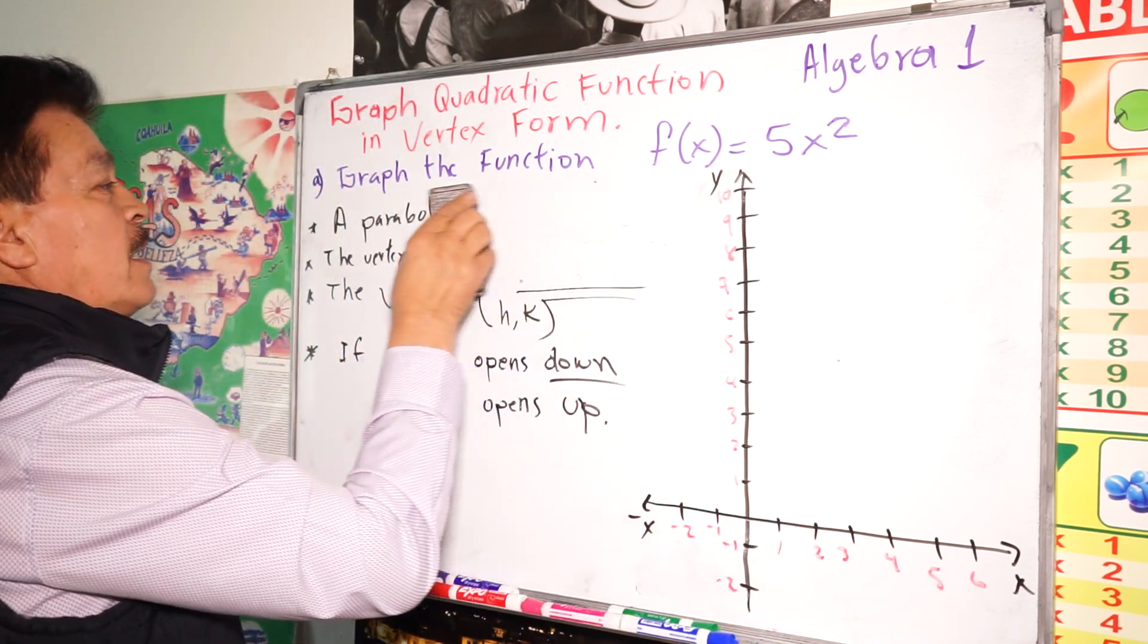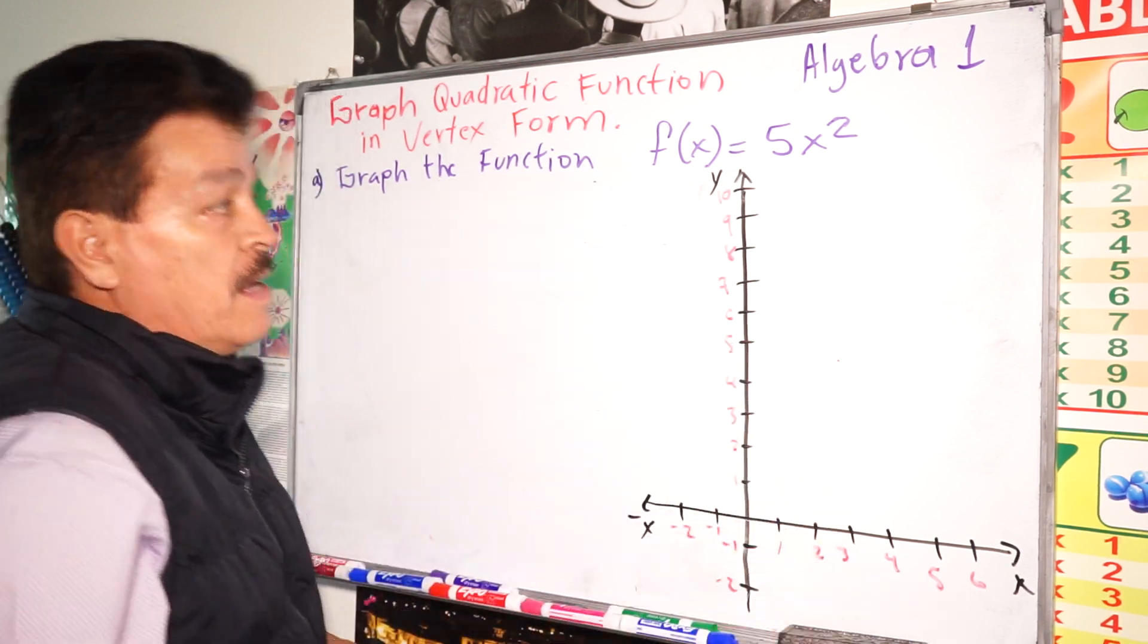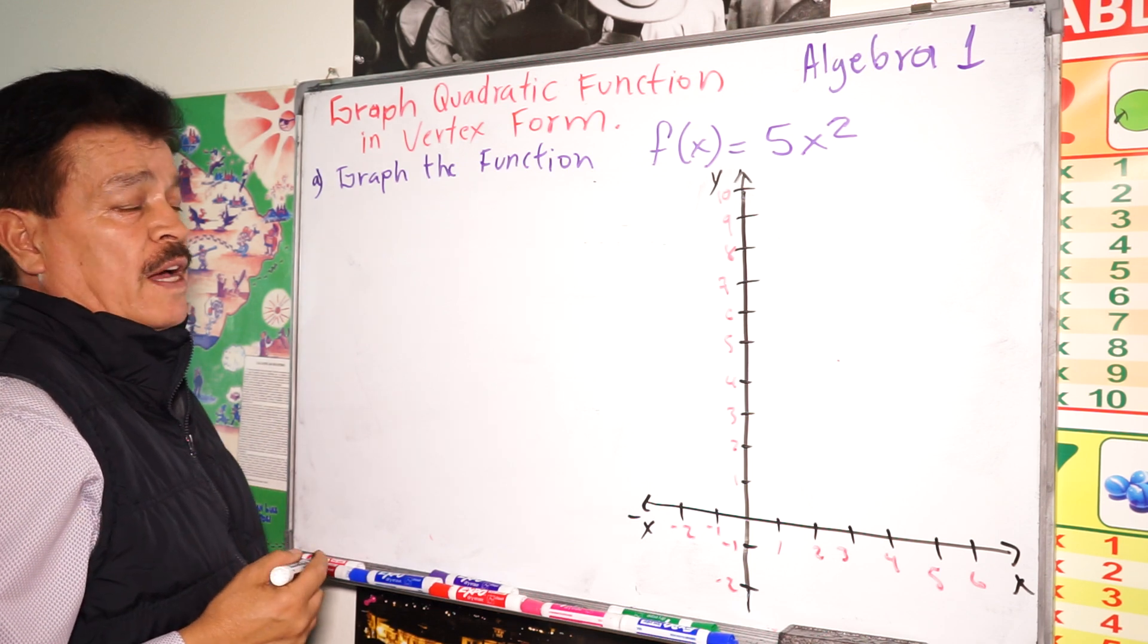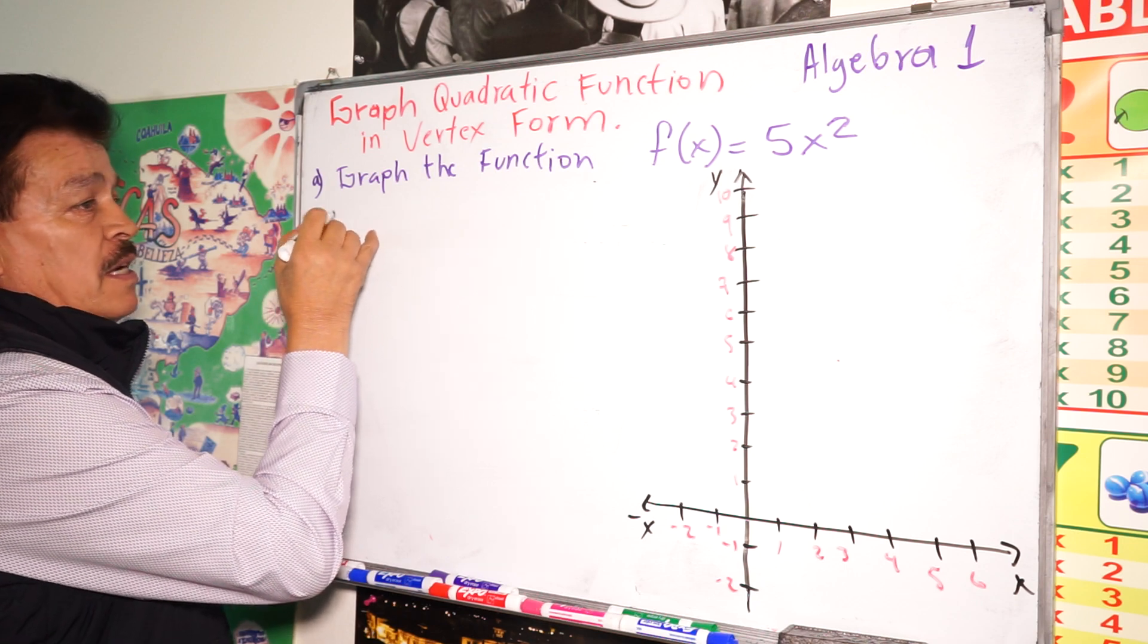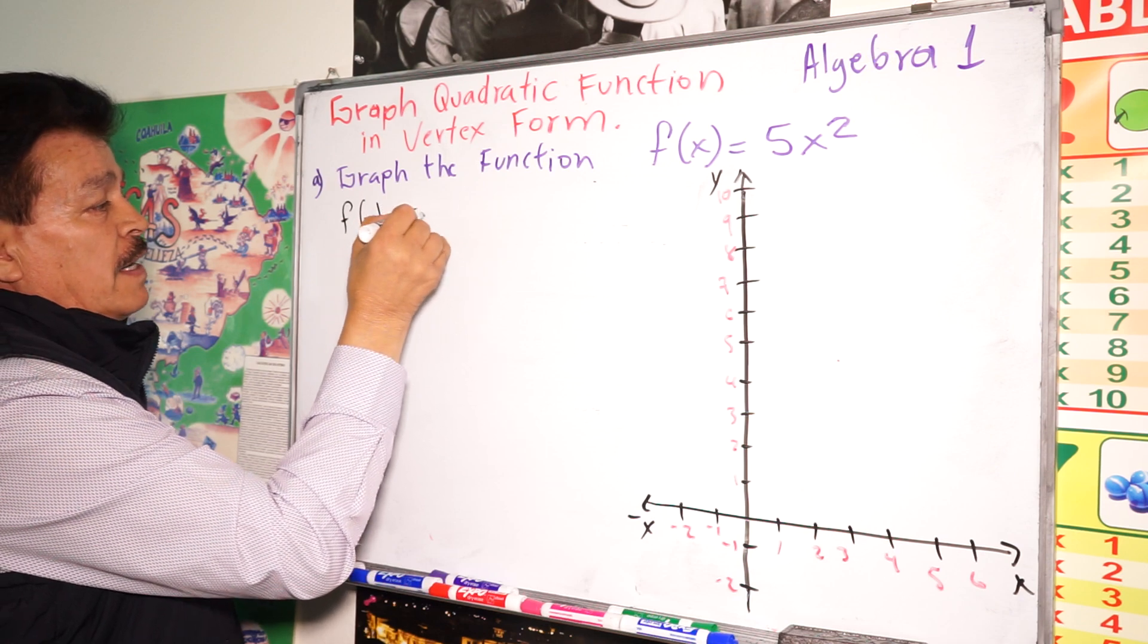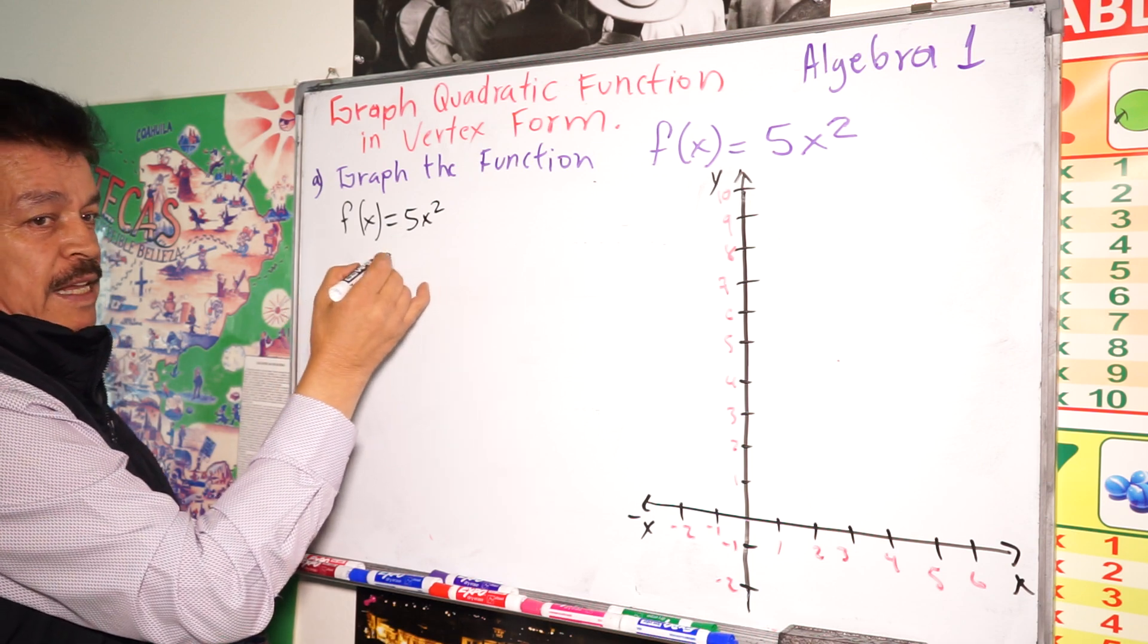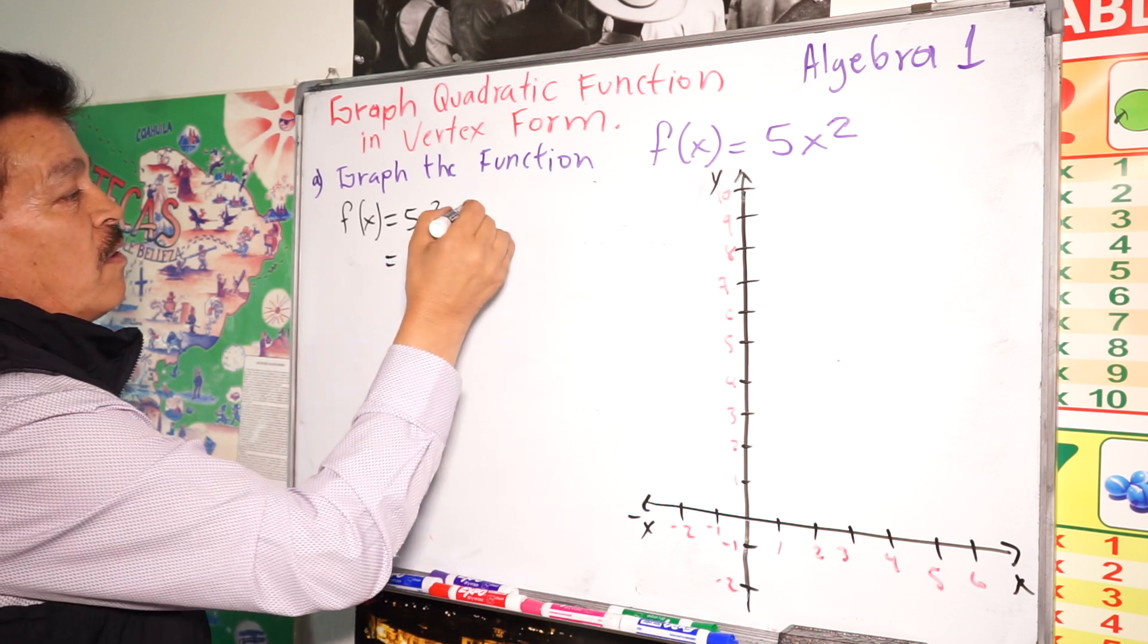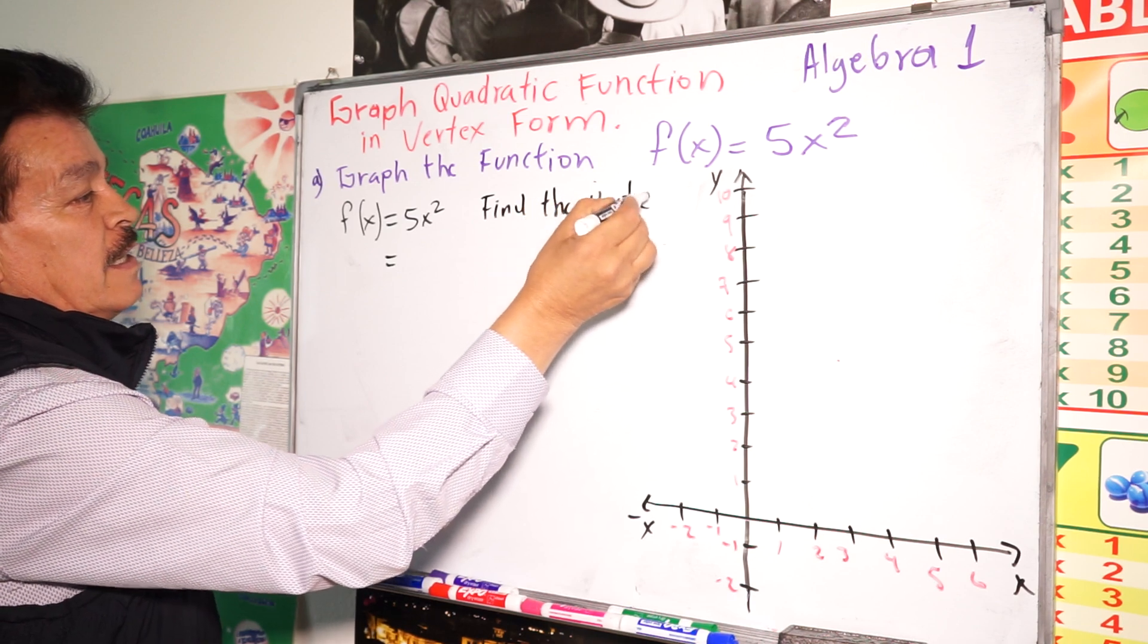Remember these ideas before we find the answer to this problem. How do we solve this problem? f(x) = 5x². We are going to find the vertex form.